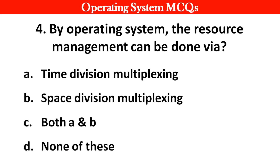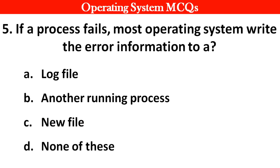Next question: By the operating system, the resource management can be done via: Options: A. Time division multiplexing. B. Space division multiplexing. C. Both A and B. D. None of these. Right answer is option C: Both A and B.